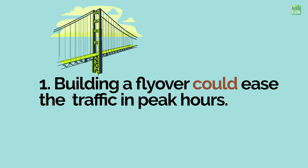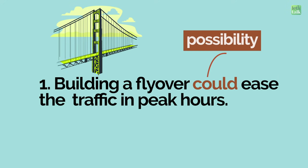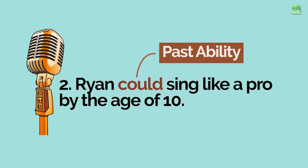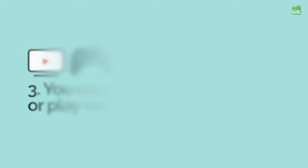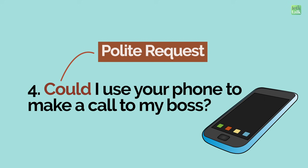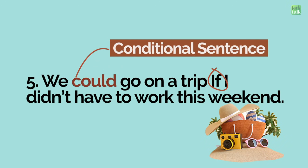The first sentence expresses a possibility — if a flyover is built, it would help ease the traffic congestion during peak hours. The second sentence tells us about Ryan's past ability to sing like a pro. The third sentence is a suggestion to either watch a movie or play video games while you are at home. Fourth is a polite request where someone is asking for your phone to make a call — possibly their phone is out of battery. And the last sentence is a conditional sentence; it's an imaginary situation.